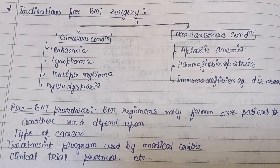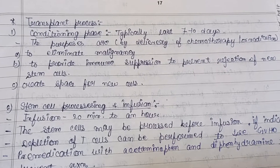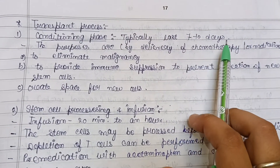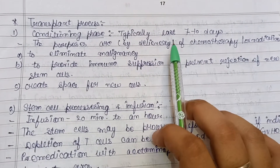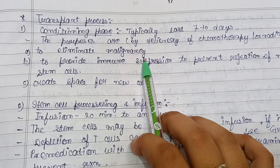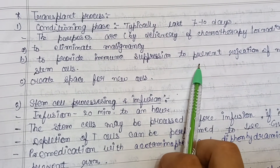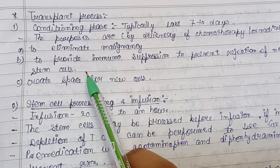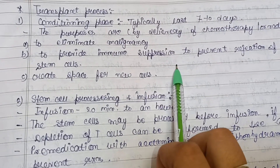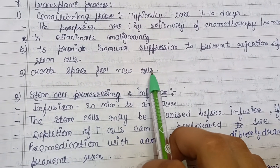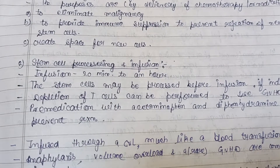The transplant process begins with the conditioning phase, which typically lasts seven to ten days. Using chemotherapy or radiation, its purposes are: to eliminate any malignancy, to provide immune suppression to prevent rejection of the new stem cells obtained from the donor, and to create space for the new cells to be adopted by the patient's body.